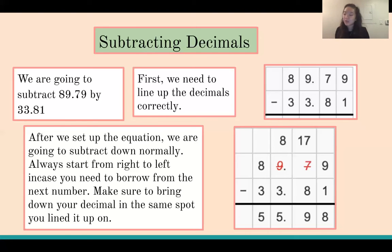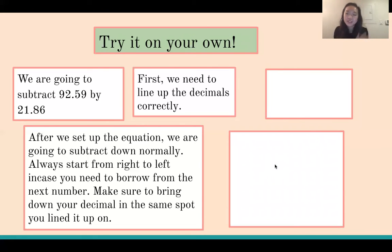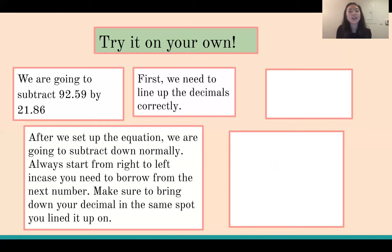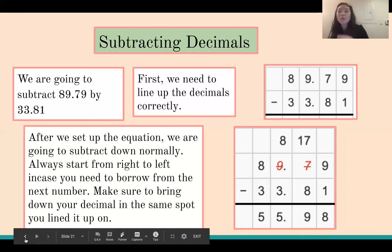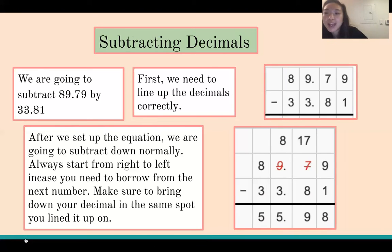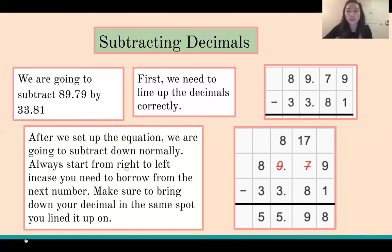That's how we do subtraction with decimals. On the next 'try it on your own' page, I have the steps written out for you. You are going to subtract 92.59 minus 21.86. Set it up similarly to what we just did. I'll give you a few moments to work this out on your own, and then we'll come back and review the answer.